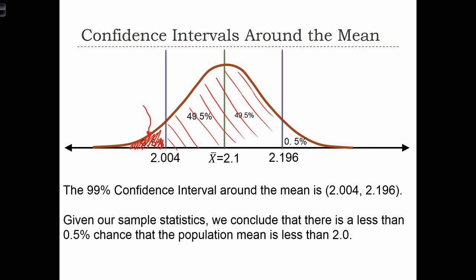we conclude that there is less than a 0.5% chance that the population mean is less than 2.0. I mean, technically it's less than 2.04, which is close enough to 2. So the analysts, based on their sample, can be fairly certain that the sample mean that they got, 2.1, precludes the possibility that the true mean of the population is down here at less than 2.0.